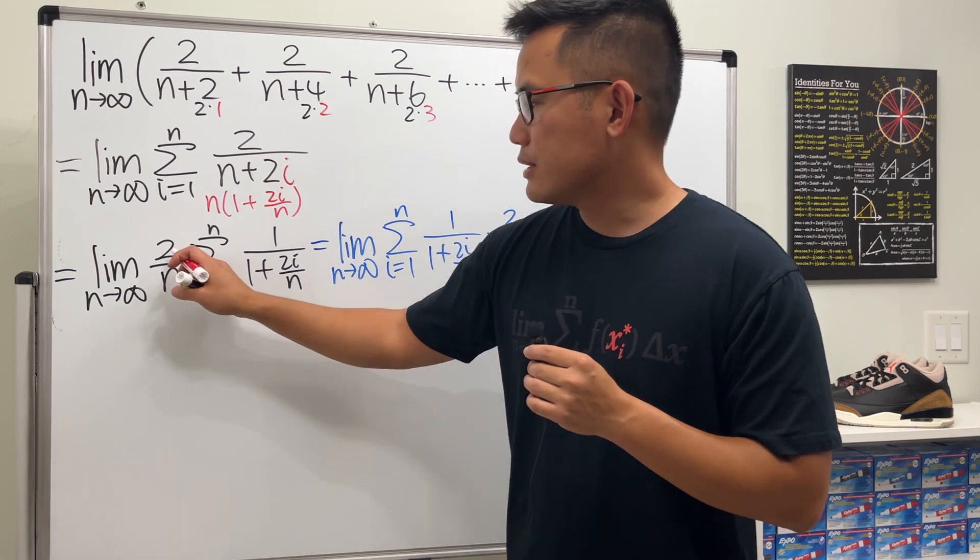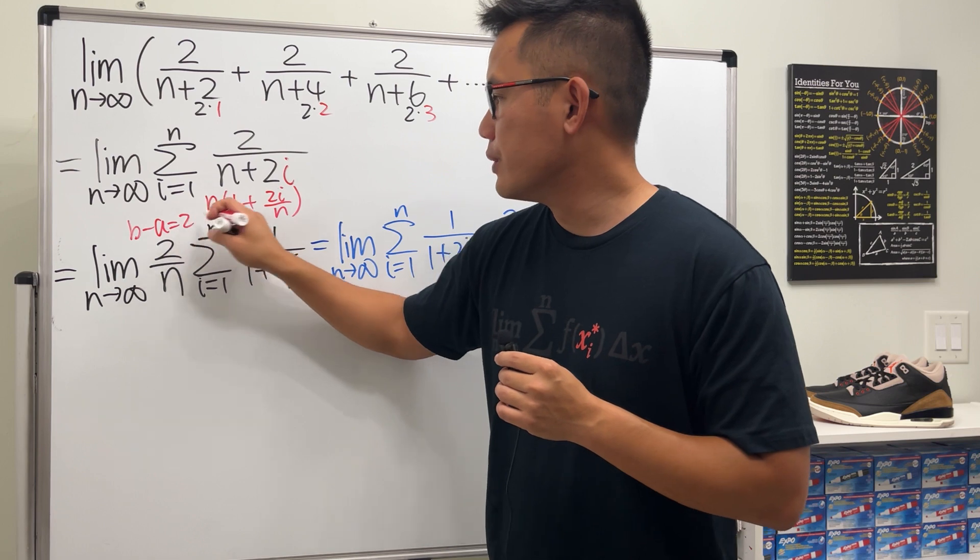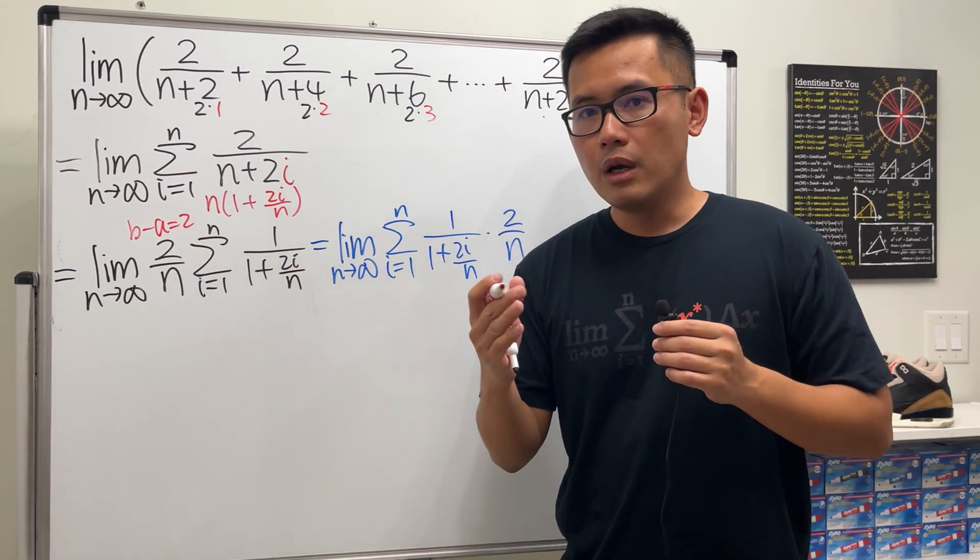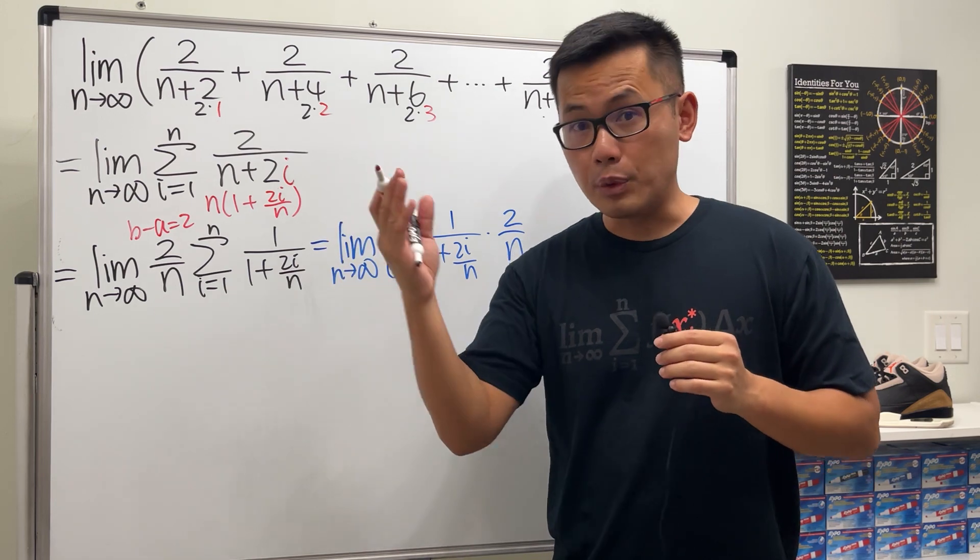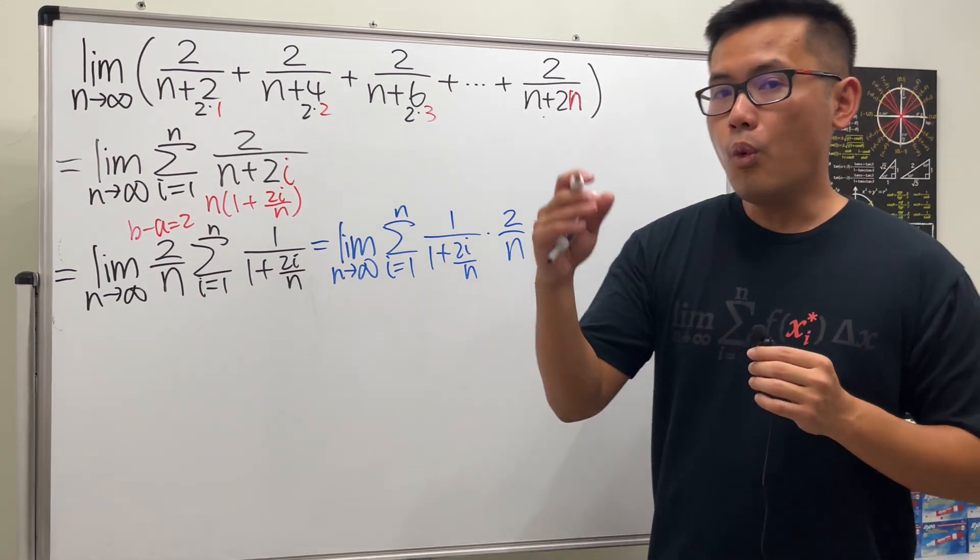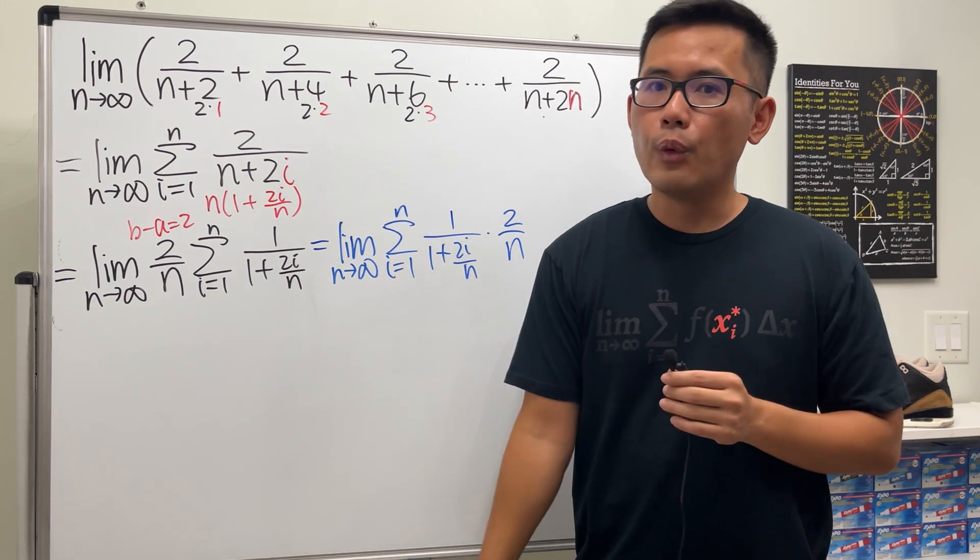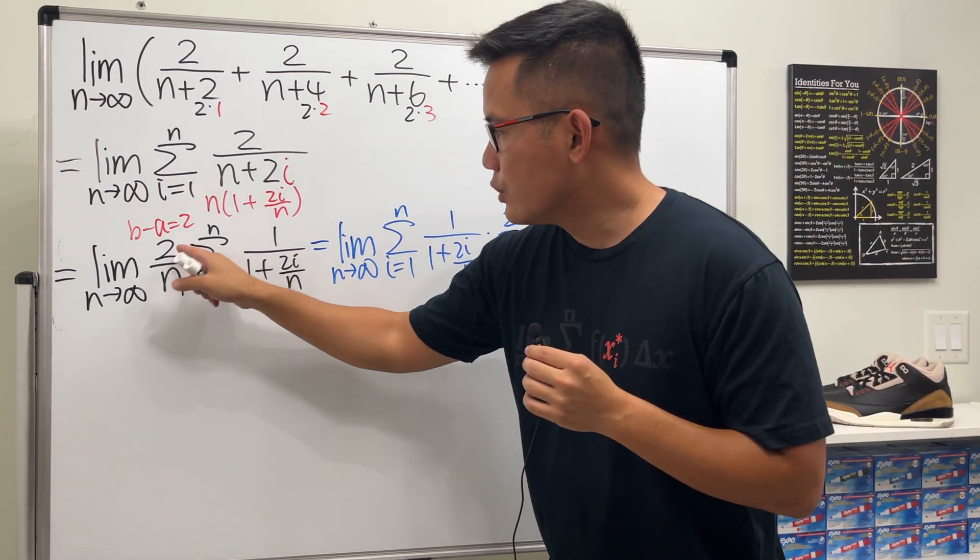So now, this right here, let's look at the 2 over n. The 2 tells us b minus a equals 2. Meaning that when we are talking about the region, it can be going from 0 to 2. Start with 0, that's much easier. Just use that. Or you can go from 1 to 3 or 15 to 17. So that's why this 2 is important.